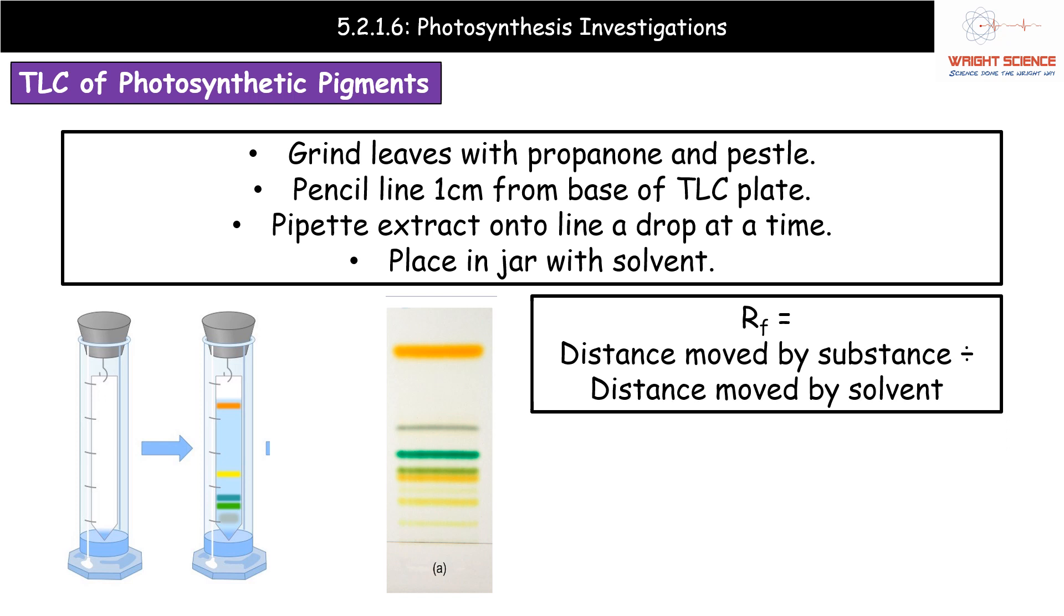What we then do is record some distances. This here gives us an example of the kind of thing you could get. We've got different colour bands representing the different pigments. What we do is measure from our pencil line with a ruler very carefully to the centre of each of those bands. That gives us the distance moved by our substance. We then divide that by the distance moved by the solvent. To calculate the RF value, distance moved by the substance divided by the distance moved by the solvent. It will always be a value between 0 and 1. So if your answer is not between 0 and 1, either you've measured something wrong, or you've put them the wrong way around on your calculator.